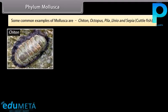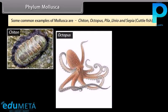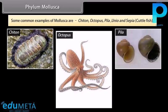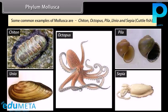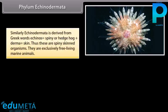The entire body of Mollusca is covered by a fold of thin skin called the mantle. This mantle secretes a hard calcareous shell of one or more pieces. Common examples of Mollusca are Chiton, Octopus, Pila, Unio, and Sepia (cuttlefish).